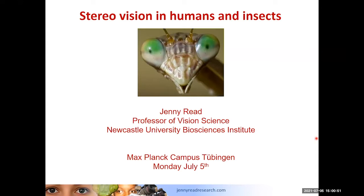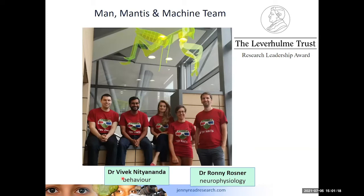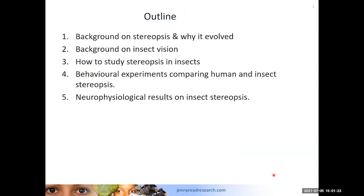Thank you very much. Delighted to have this invitation to come and speak to you. Definitely do ask questions during the talk, especially if there's anything I say that isn't clear, and more open ended questions we can have as a discussion at the end. I want to begin by crediting Dr. Vivek Nityananda and Dr. Ronnie Rosner. The outline covers: a brief background on stereopsis and how it evolved, a background on insect vision, technical issues of studying stereopsis in insects, behavioural experiments, and neurophysiological results about the underpinnings of insect stereopsis.